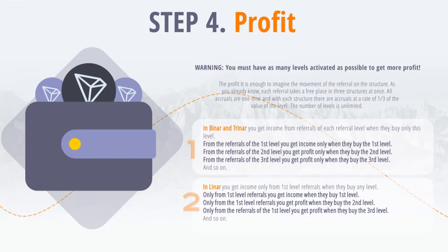Step 4: Income. To get more income, you must have activated as many levels as possible. Income is calculated very easily — it is enough to imagine the referral movement in the structure. As you already know, each referral takes up a place in three structures at once. All charges are one-time, and each structure is charged one third of the price of the level. The number of levels is unlimited.